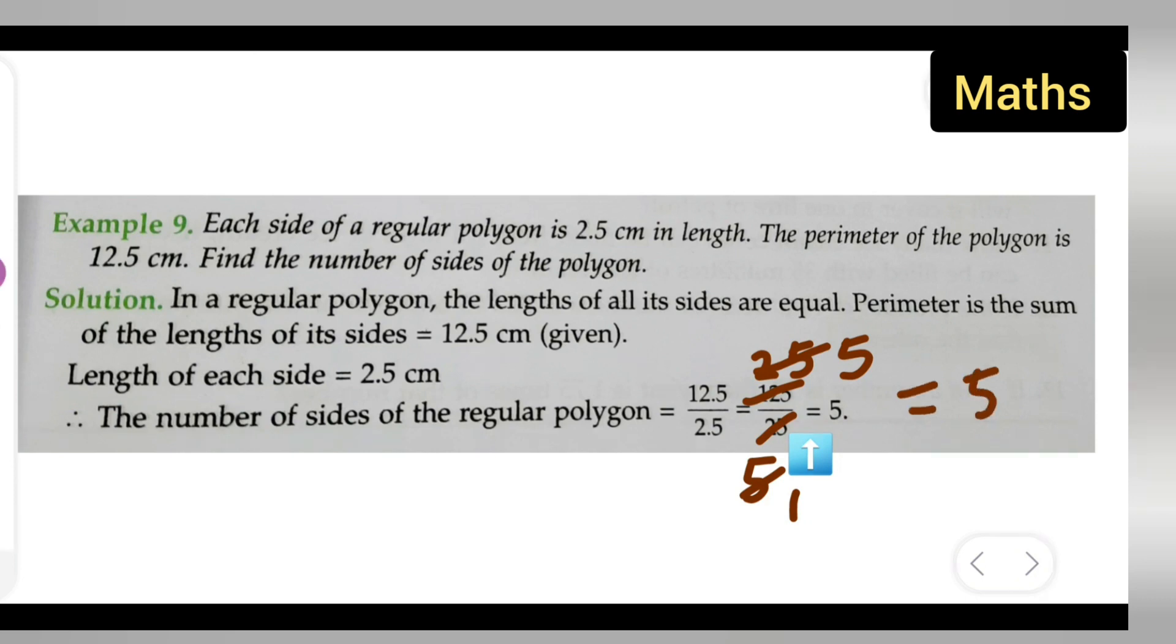This is how we find it out. I hope you all know the cancellation part as well. Therefore, the number of sides of the regular polygon is 5. I hope you all have understood the answer to today's question. Thanks for watching. If you have any doubts or queries, you can comment below.